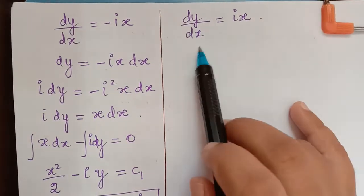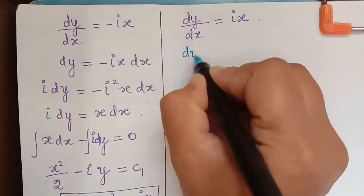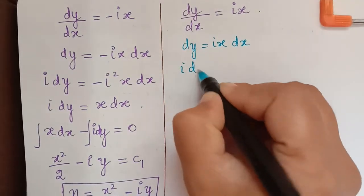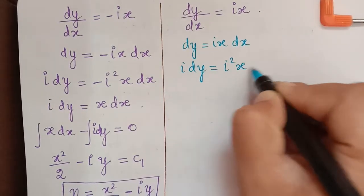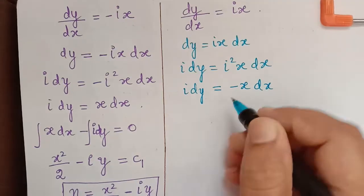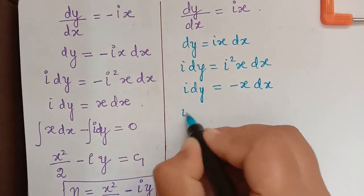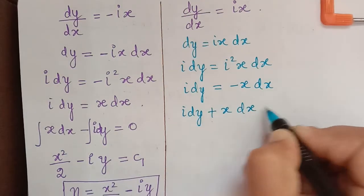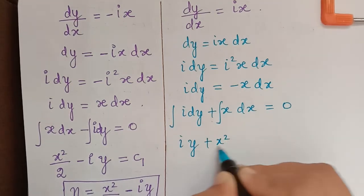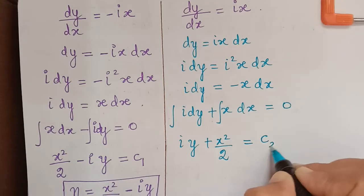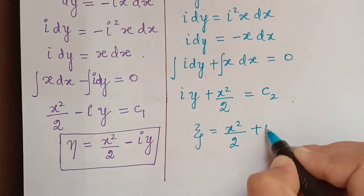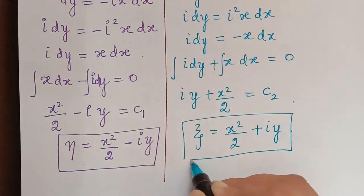For the second equation, dy/dx equals ix, so dy equals ix dx. Multiplying both sides by i: i dy equals i squared x dx, and since i squared is negative 1, this becomes negative x dx. Bringing this to the left: i dy plus x dx equals 0. Integrating: iy plus x squared by 2 equals C2. Therefore, xi equals x squared by 2 plus iy.